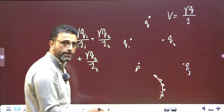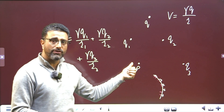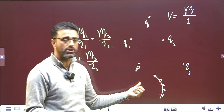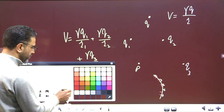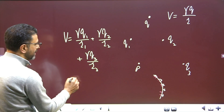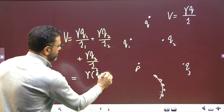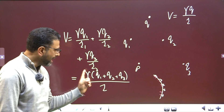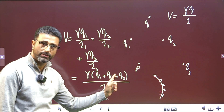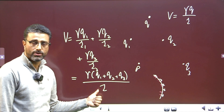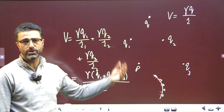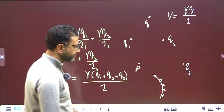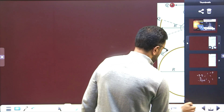If all the charge elements are at the same distance from the point where we have to find the potential, then R1, R2, R3 are all the same. So we can write gamma times (Q1 + Q2 + Q3) divided by R — that is, gamma times the total charge of the system divided by the common distance of the point from the different elements. So: gamma times total charge divided by common distance.